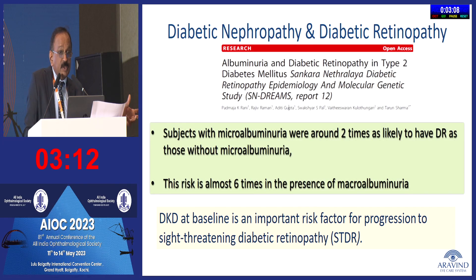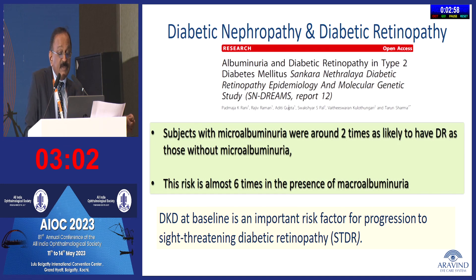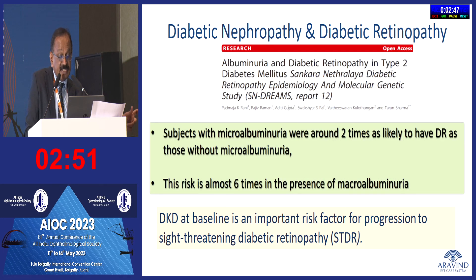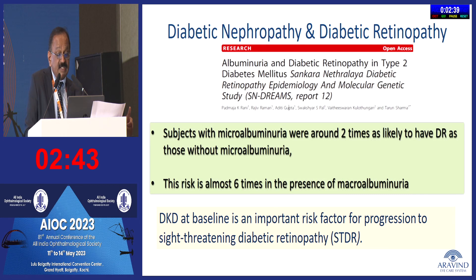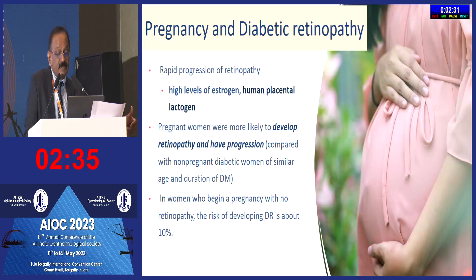Dr. Amod Gupta from PGI clearly showed that controlling lipids with oral atorvastatin therapy in type 2 diabetic patients with dyslipidemia reduces the severity of hard exudates and sub-foveal lipid migration in diabetic macular edema. Regarding kidneys: patients with microalbuminuria are around two times as likely to have diabetic retinopathy as those without, and in the presence of macroalbuminuria the risk is almost six times. Diabetic kidney disease at baseline is a strong predictor of progression to sight-threatening retinopathy.